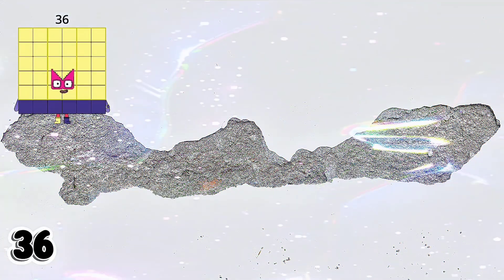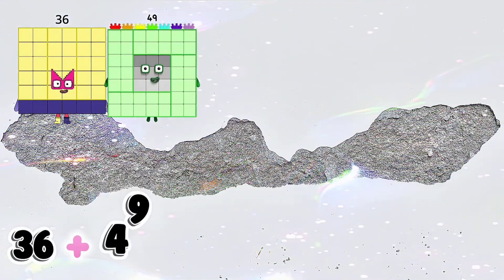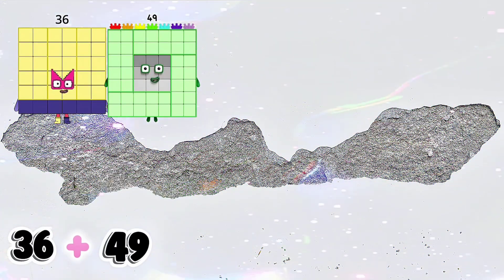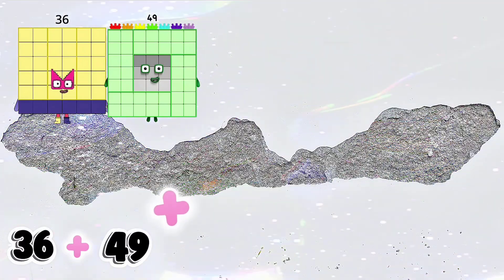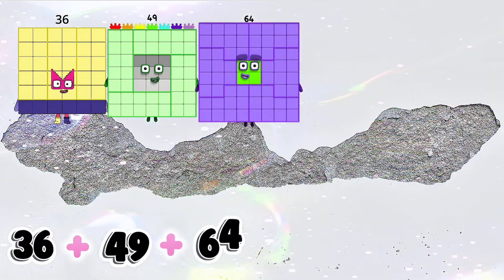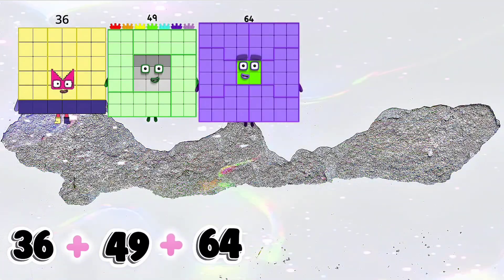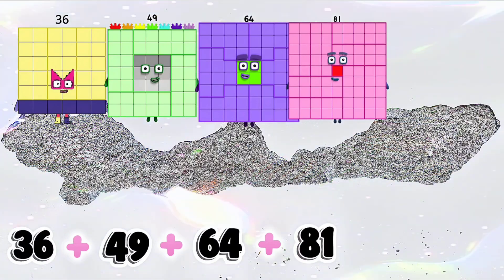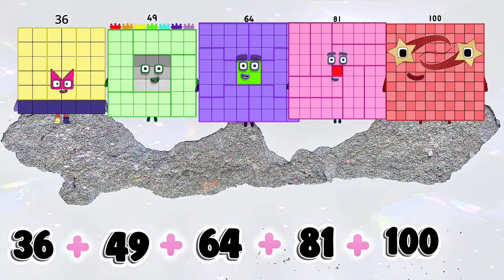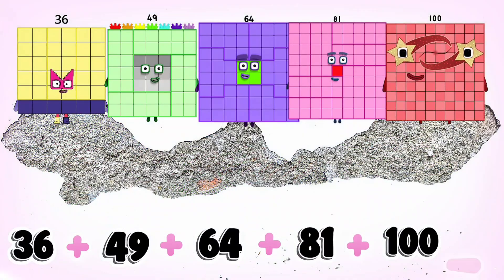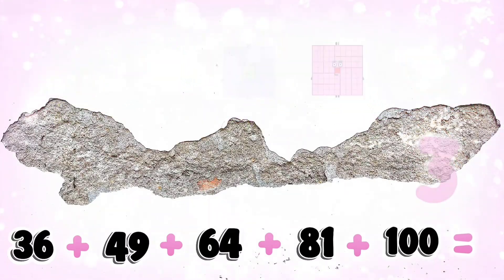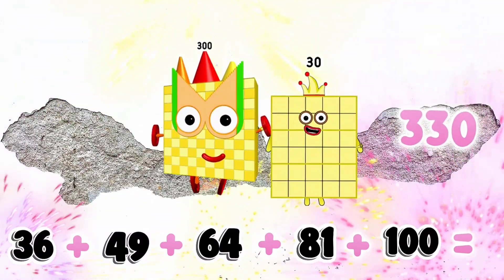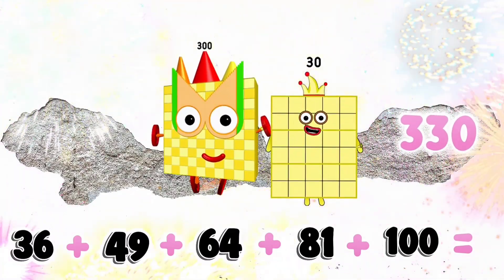36 plus 49 plus 64 plus 81 plus 100 equals 330.